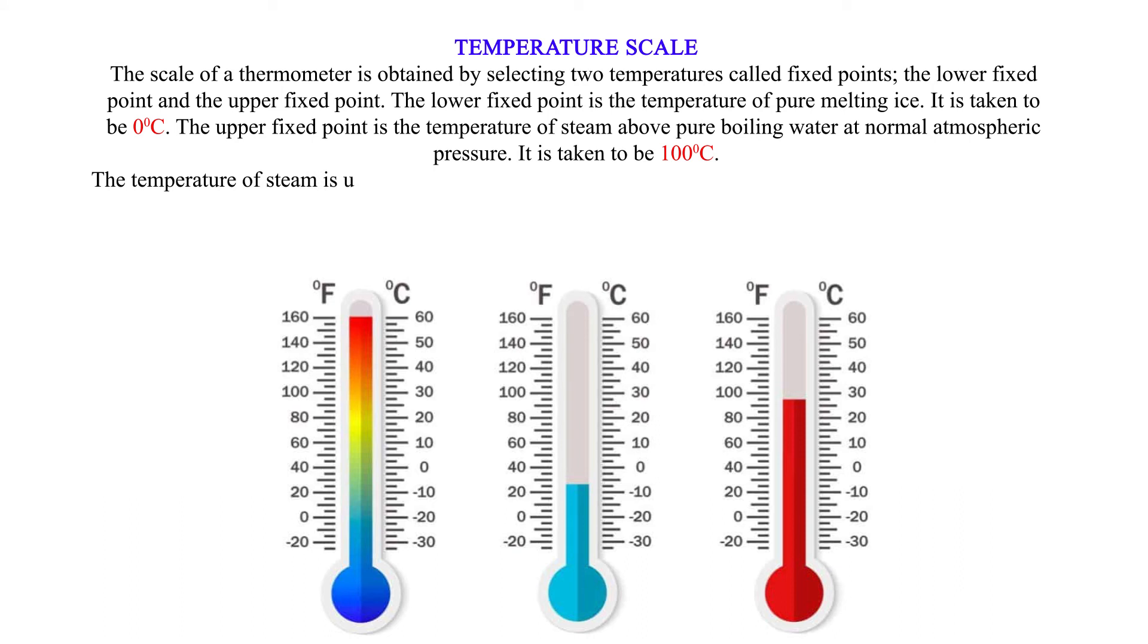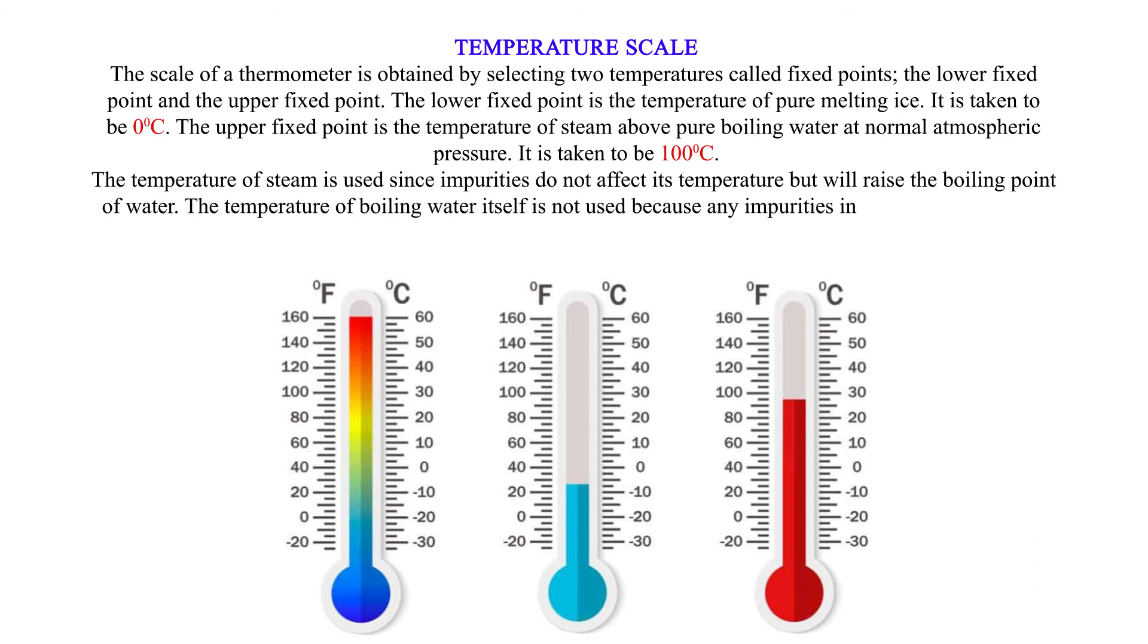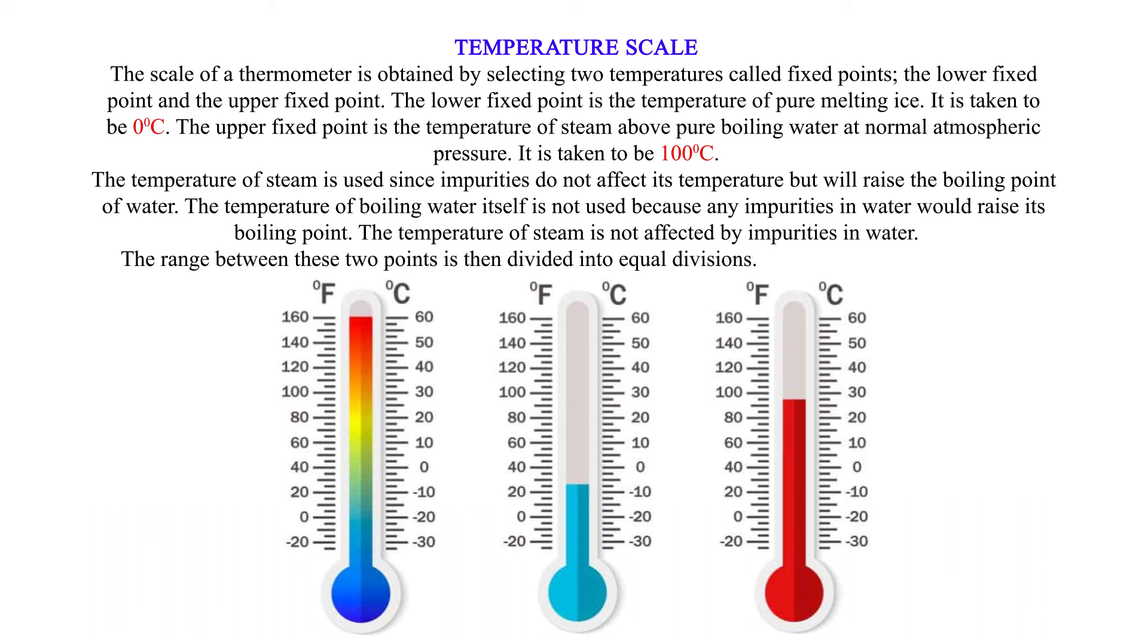The temperature of steam is used since impurities do not affect its temperature but will raise the boiling point of water. The temperature of boiling water itself is not used because any impurities in water would raise its boiling point. The temperature of steam is not affected by impurities in water. The range between these two points is then divided into equal divisions. Each division is called a degree.